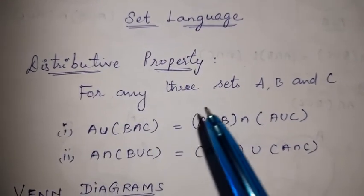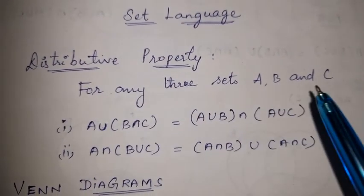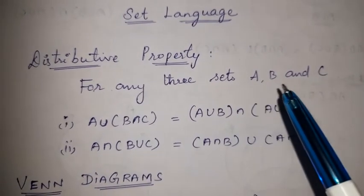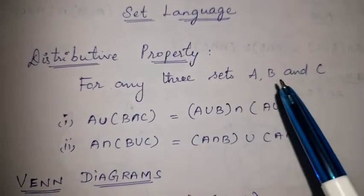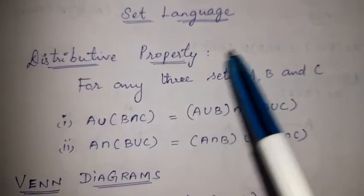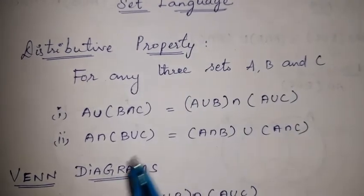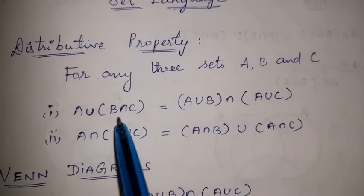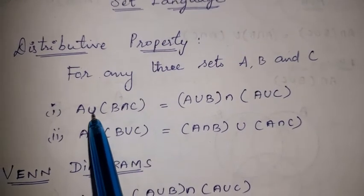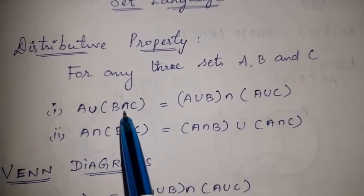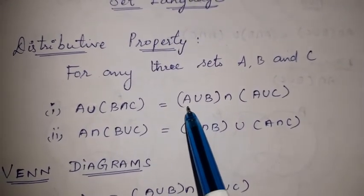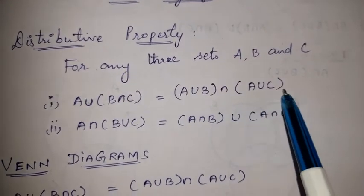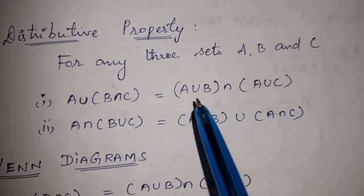For any 3 sets A, B and C, the Distributive Property states: Roman numeral 1 — A union (B intersection C) is equal to (A union B) intersection (A union C). This is the first Distributive Property.